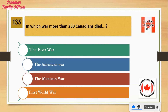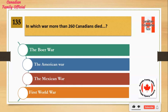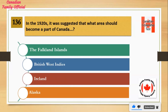In which war did more than 260 Canadians die? Number 1: The Boer War. Number 2: The American War. Number 3: The Mexican War. Number 4: First World War. And the answer is the Boer War.